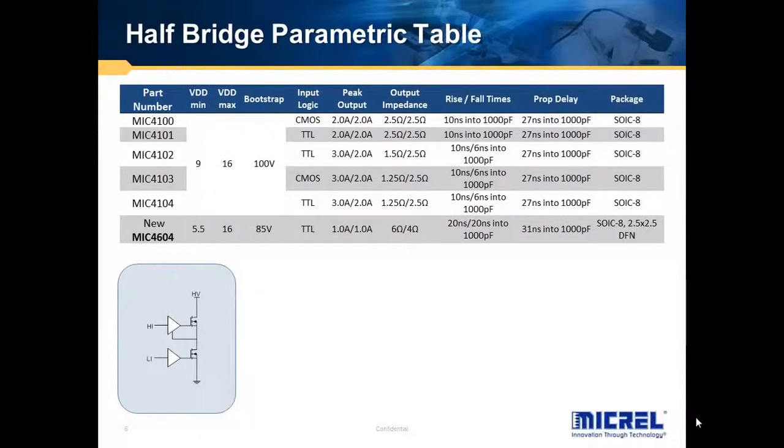Now, let's talk about the parametric table, so we can differentiate between the product families. The 4100 family has a lot of capability of driving very fast. So for example, the 4101 can drive up to three amps, 4100 can drive two amps, and the 4102, 4103, and 4104 can drive up to three amps. That allows switching at very fast speeds typically used in power supplies to keep the efficiency really high.